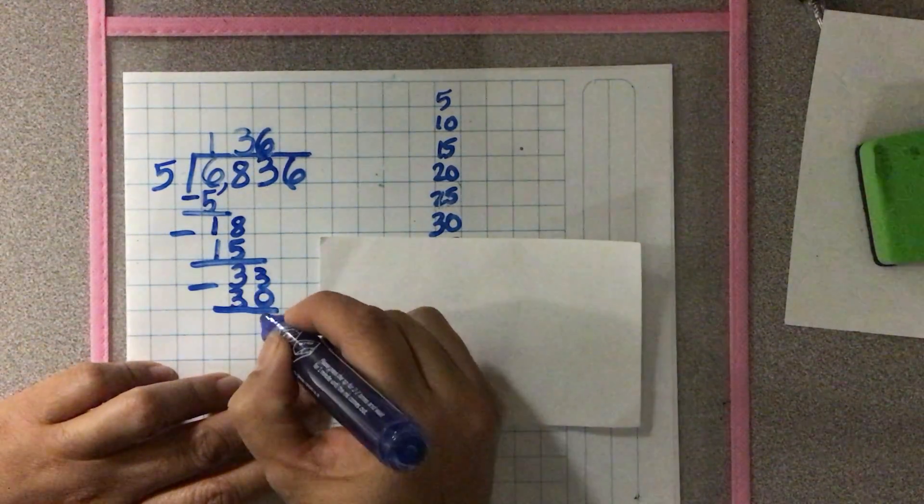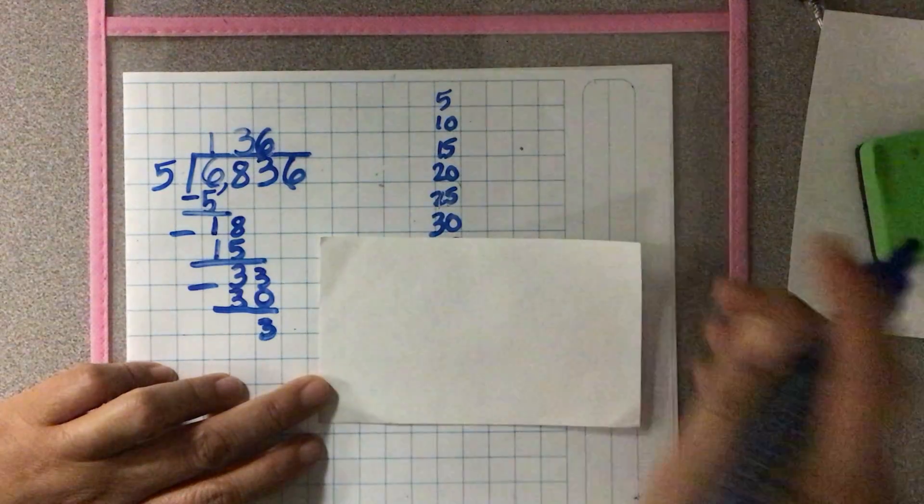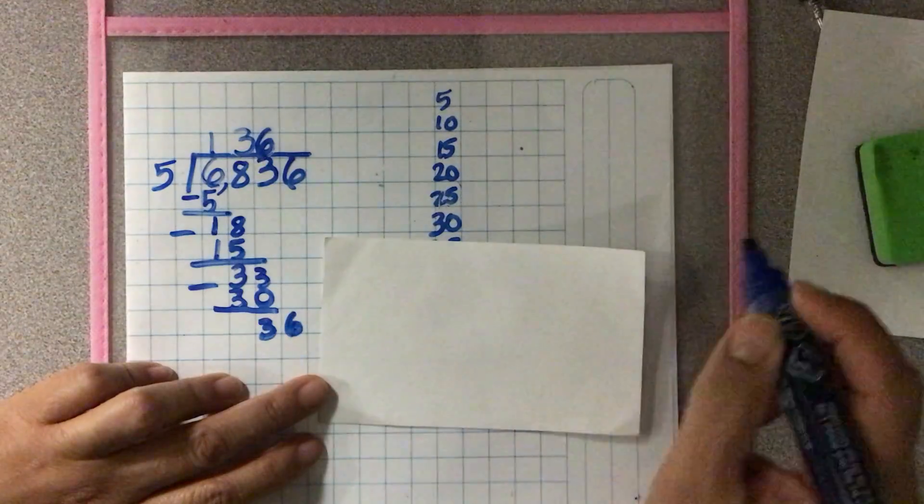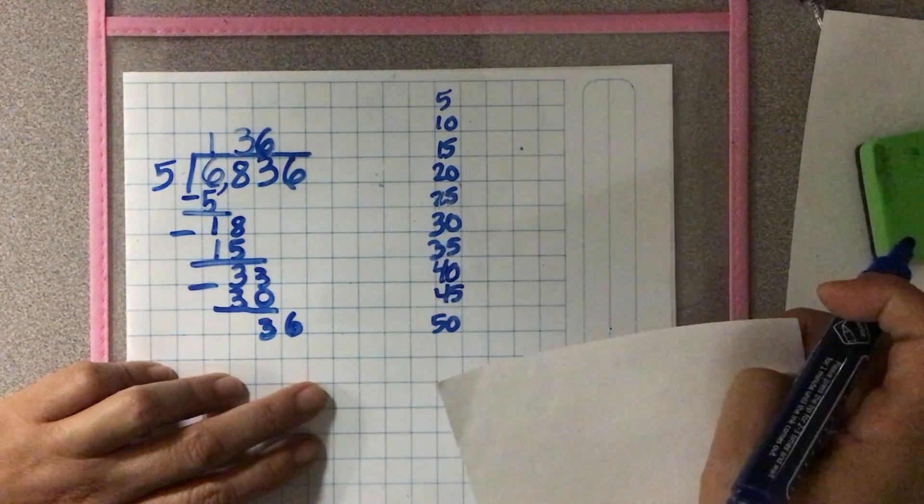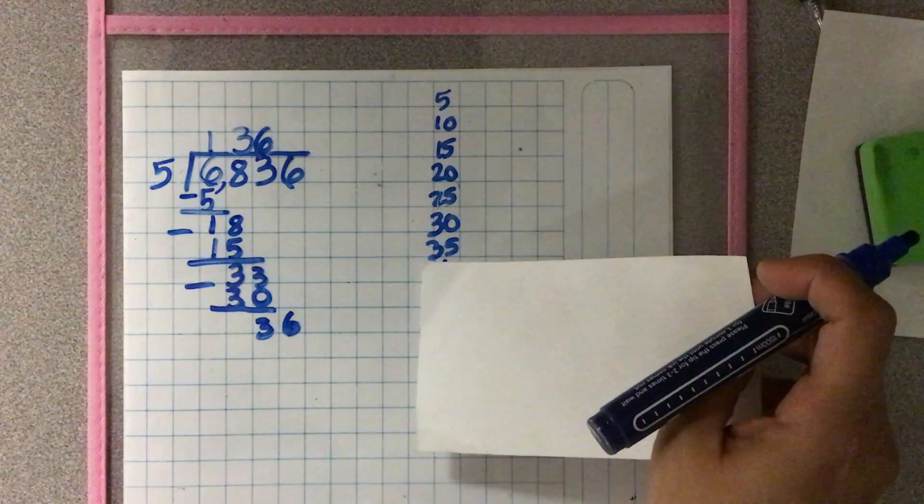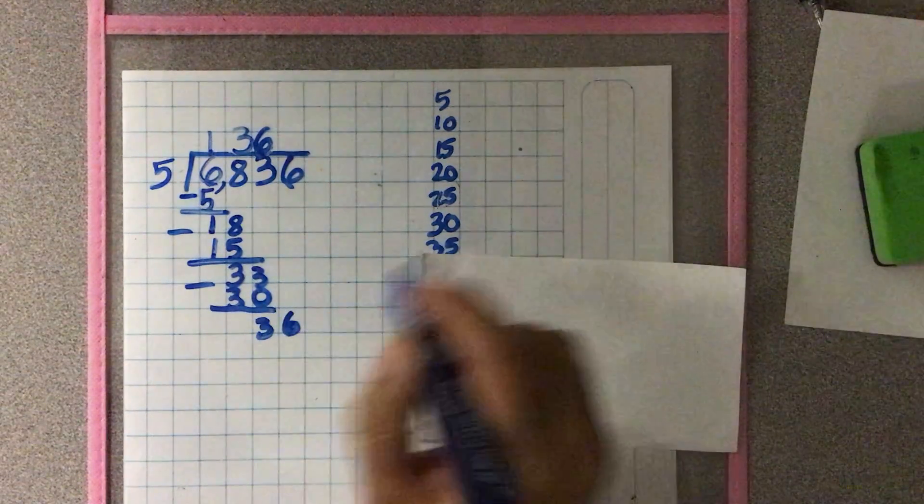Now I go to the next digit, which is the 6. I have 36 ones, and I don't have 36 in my times tables, but I have 35.